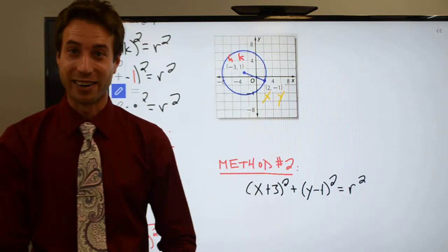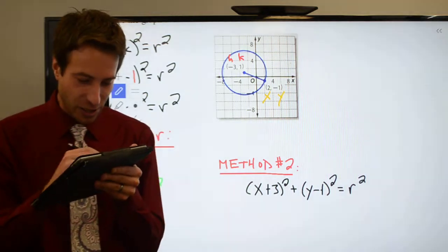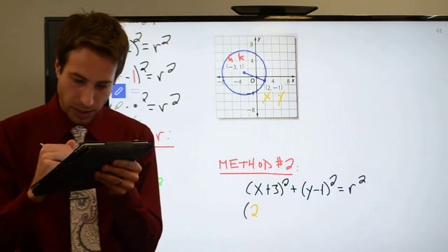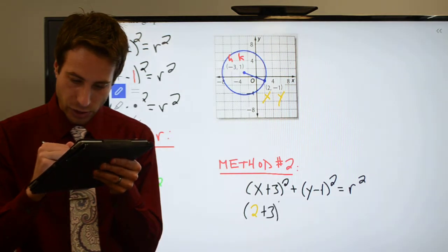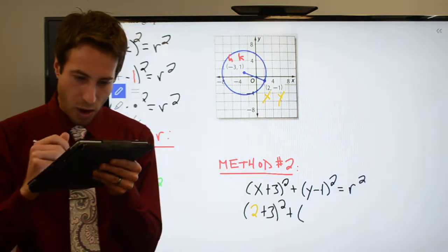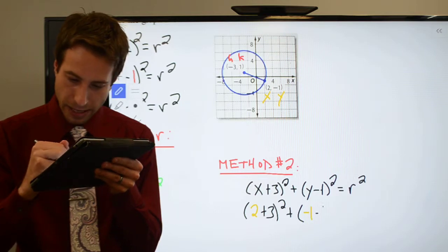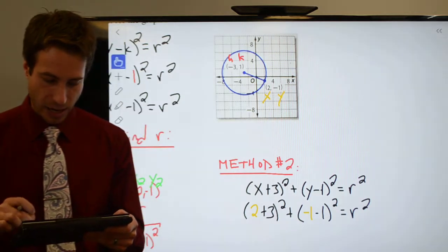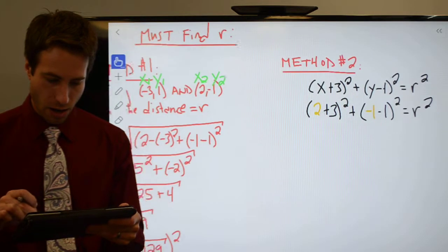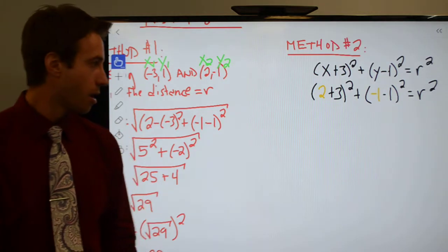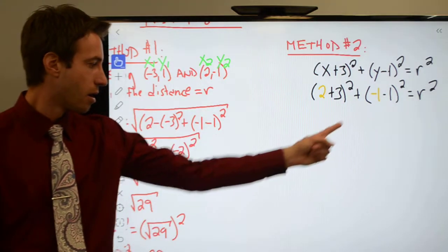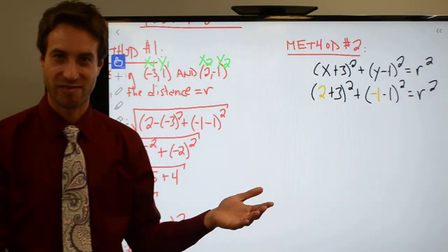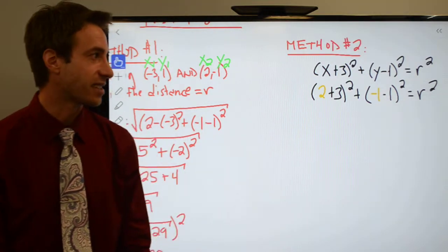If I plug in the value for x and I plug in the value for y, what's the only thing I don't know? Yeah, r squared. Yeah, let's try that. Let's try that. I think this is going to be great. Here we go. The x is 2 plus 3 squared plus the y value is minus 1. Minus 1 squared is equal to r squared. Hold up a second.